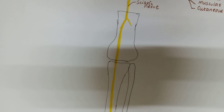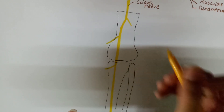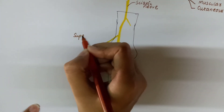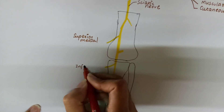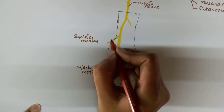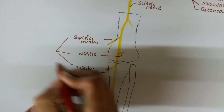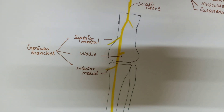First we will see the genicular branches of the tibial nerve. The tibial nerve gives three genicular branches: the superior medial genicular branch, the inferior medial genicular branch, and the middle genicular branch. These are the genicular branches.